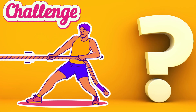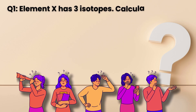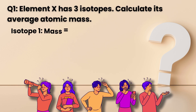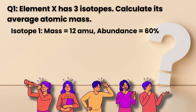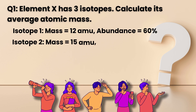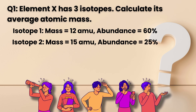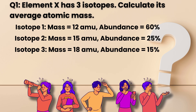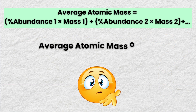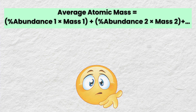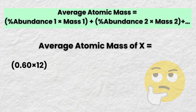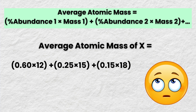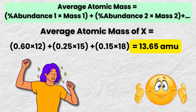Challenge question 1: Element X has three isotopes. Calculate its average atomic mass. Isotope 1 has mass 12 AMU and abundance 60%. Isotope 2 is mass 15 AMU, abundance 25%. Isotope 3 is mass 18 AMU, abundance 15%. So average atomic mass of element X equals 0.6×12 plus 0.25×15 plus 0.15×18, which equals 13.65 AMU.